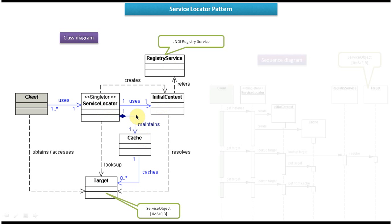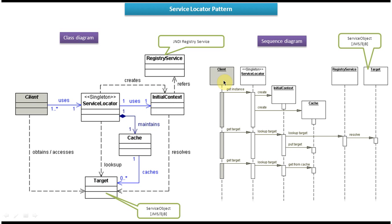Next we will see the Sequence Diagram of the Service Locator design pattern. Here you can see the Client, the Service Locator which is a Singleton class, the InitialContext which is used to do the JNDI lookup to the JNDI Registry Service, a Hash which is used to maintain the service object locally, and the Registry Service — usually a JNDI registry — which maintains service objects as key-value pairs. The target will be a JMS service object, EJB service object, or data service object.